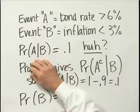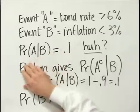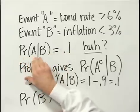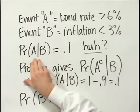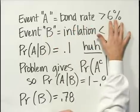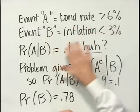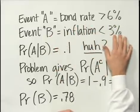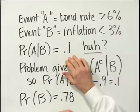If I look at those two things, the probability of A given B — the probability that the bond rate is above 6% given that inflation is below 3% — is actually equal to 0.1, or 10%.